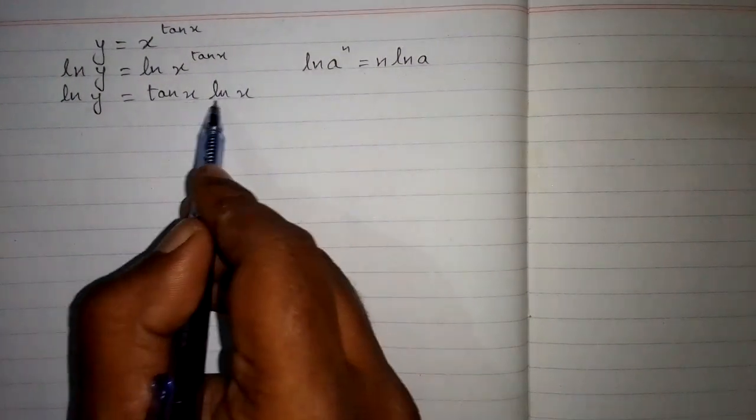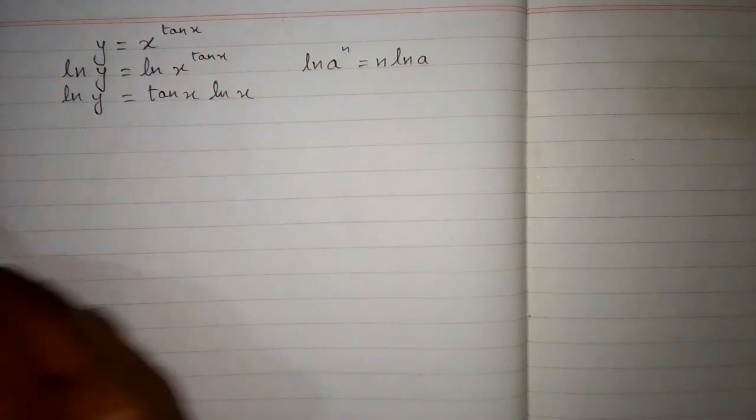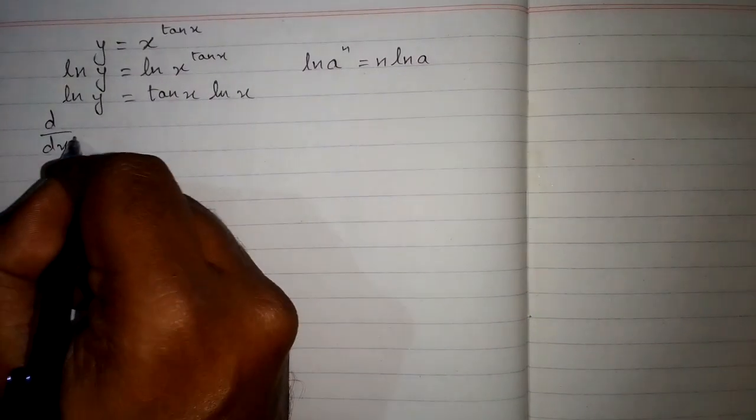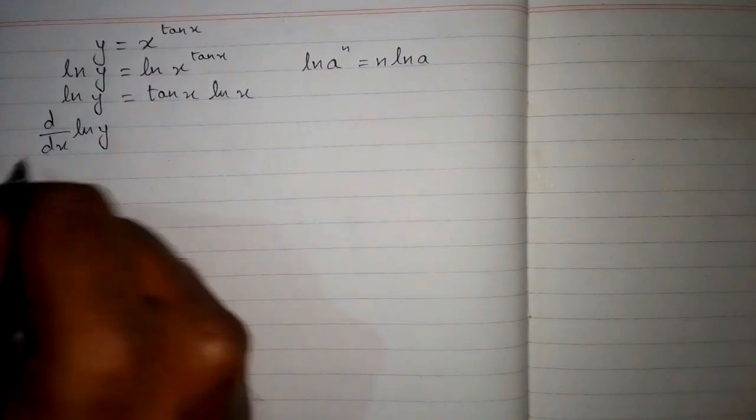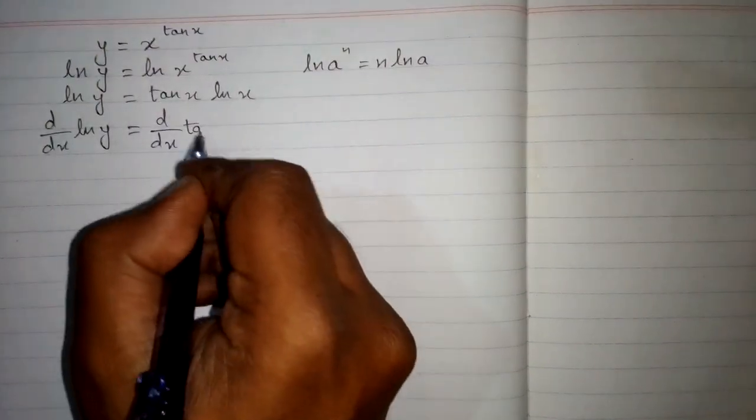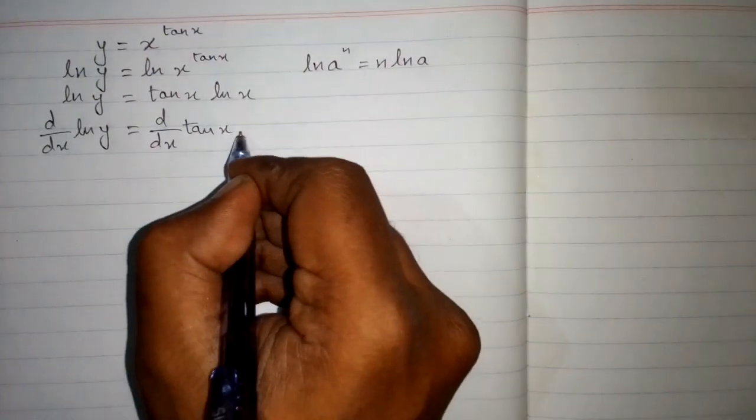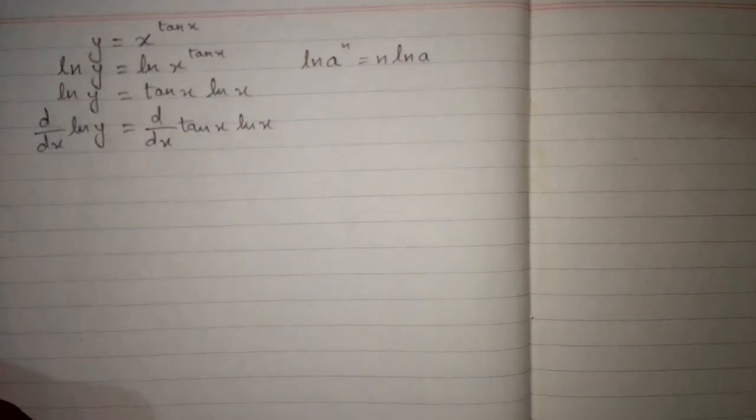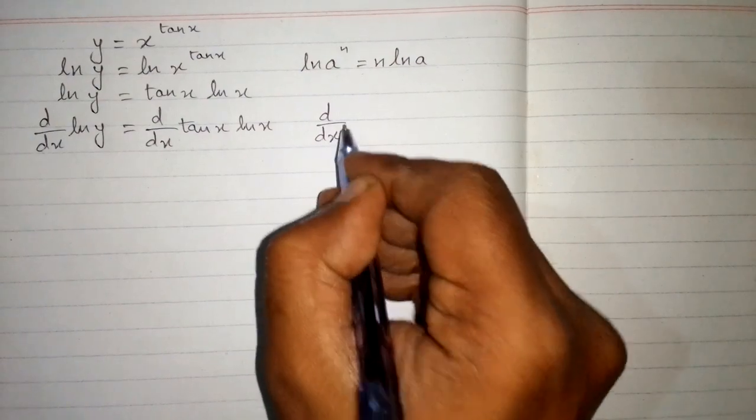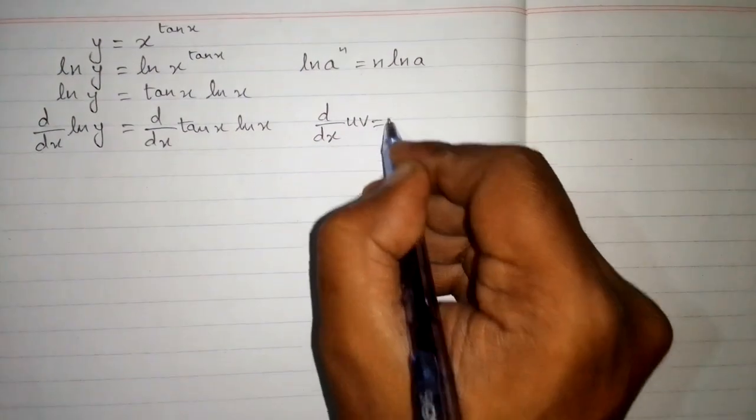Now differentiate both sides with respect to x, so we have d by dx of ln y is equal to d by dx of 10x multiplied by ln x. Here we will apply product rule of differentiation, which is d by dx of uv is equal to u times derivative of v plus v times derivative of u.